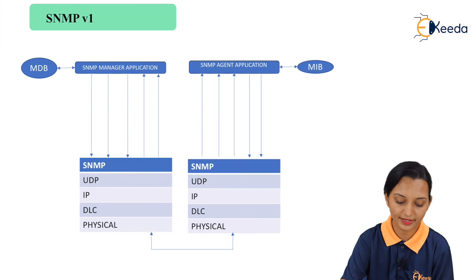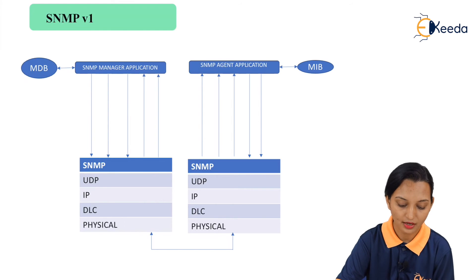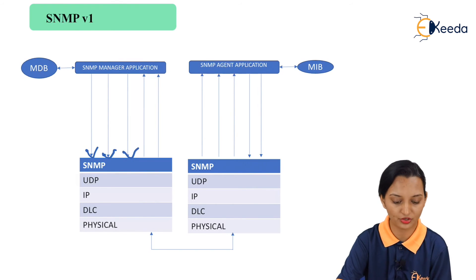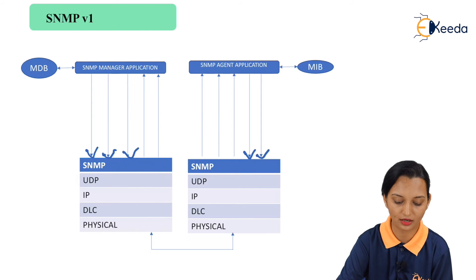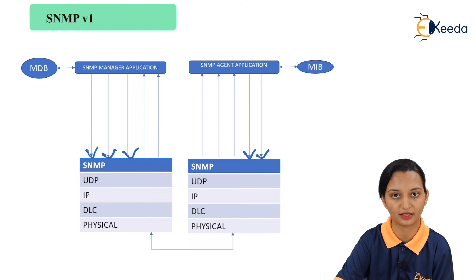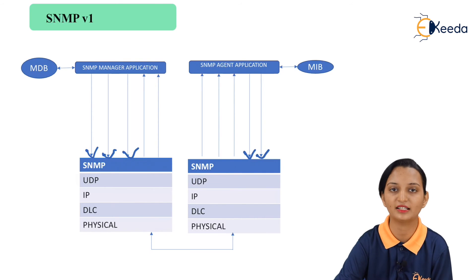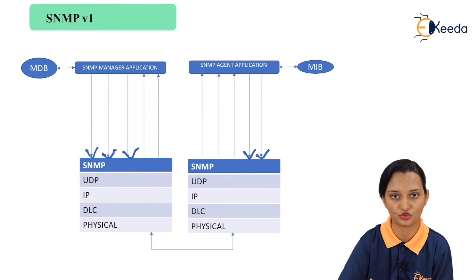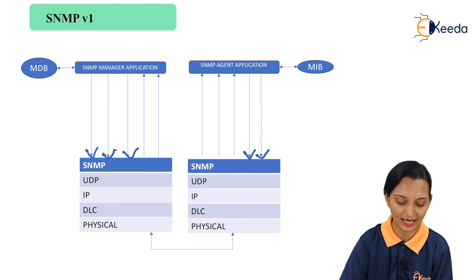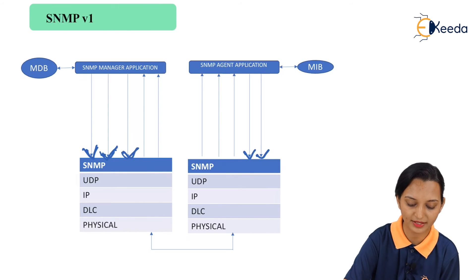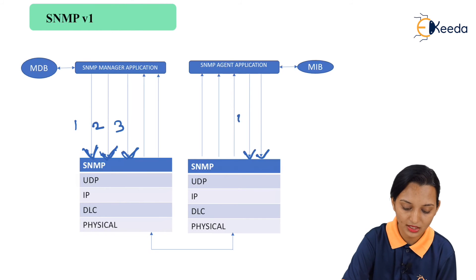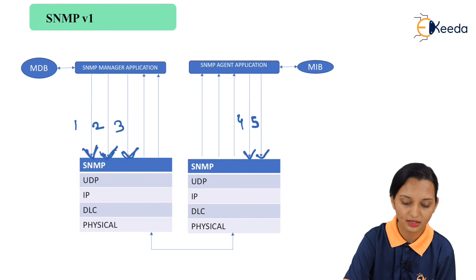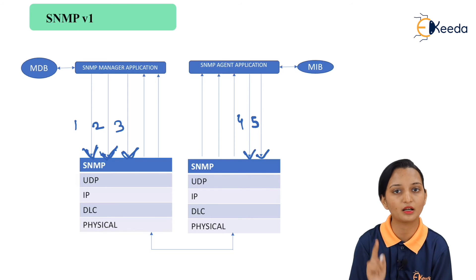Exactly, the SNMP V1 architecture has three messages generated by the manager side and two messages generated by the agent side. Comparing with the basic model, the request message is classified into three messages: get request, get next request, and set request. The response is generated from the receiver side, and the fifth one is the trap. This is the architecture — the first aspect of the SNMP communication model — and that architecture should be fixed yet flexible.